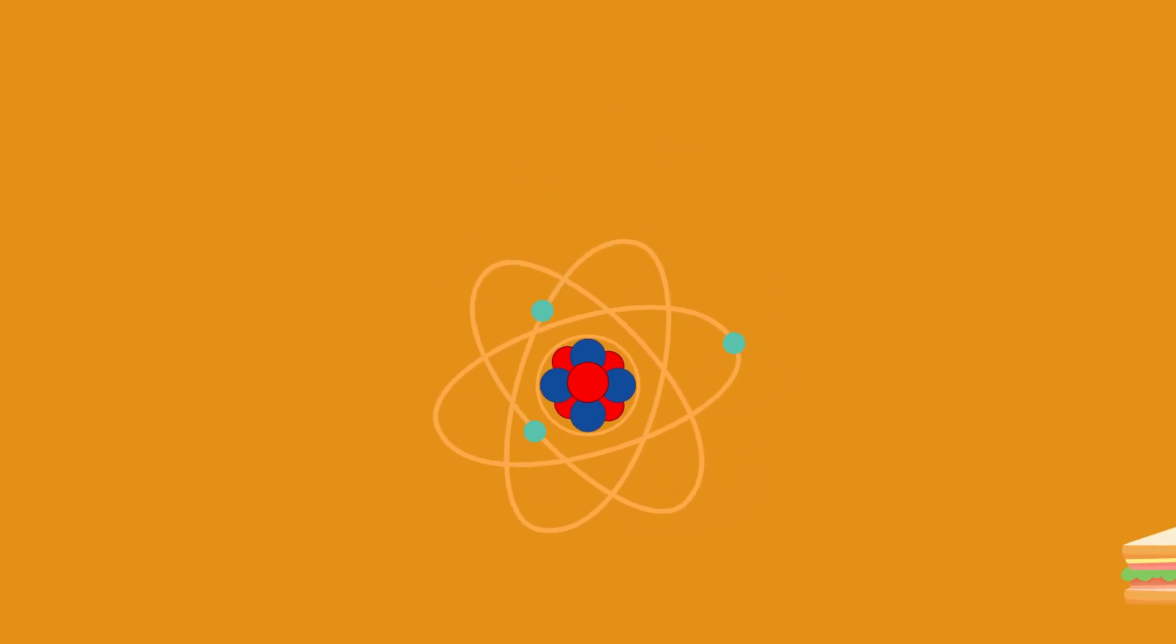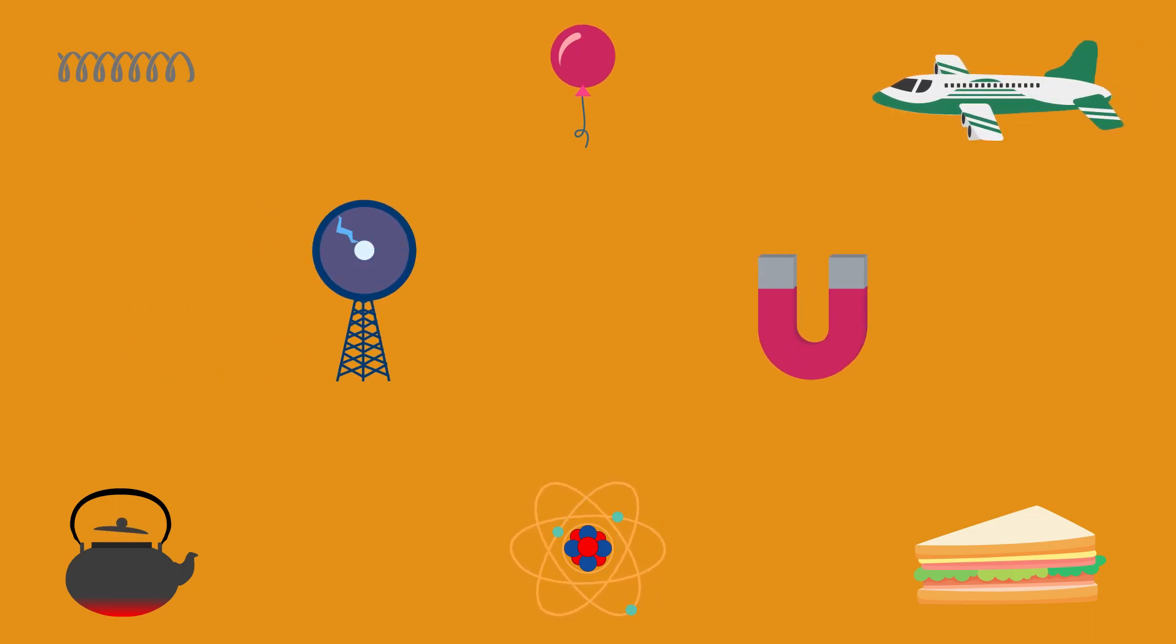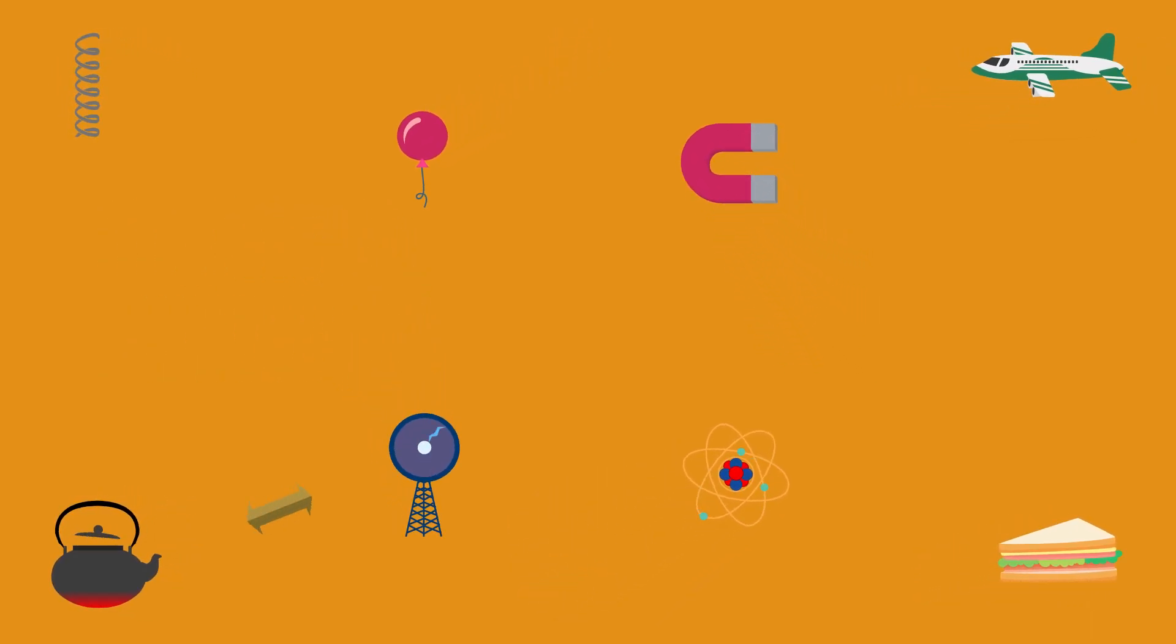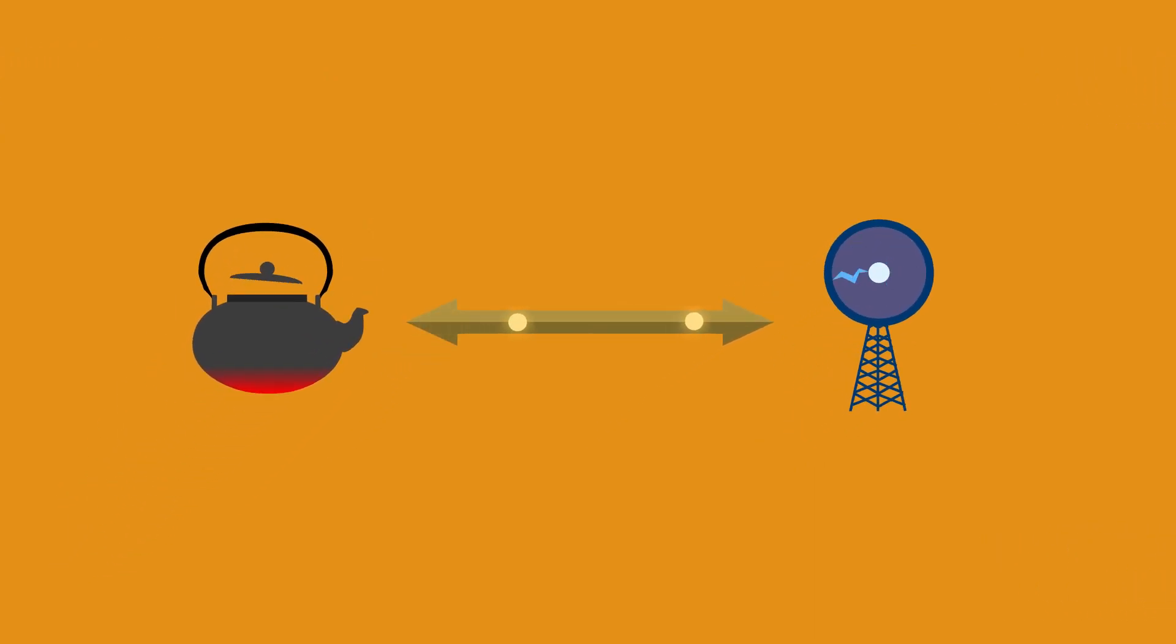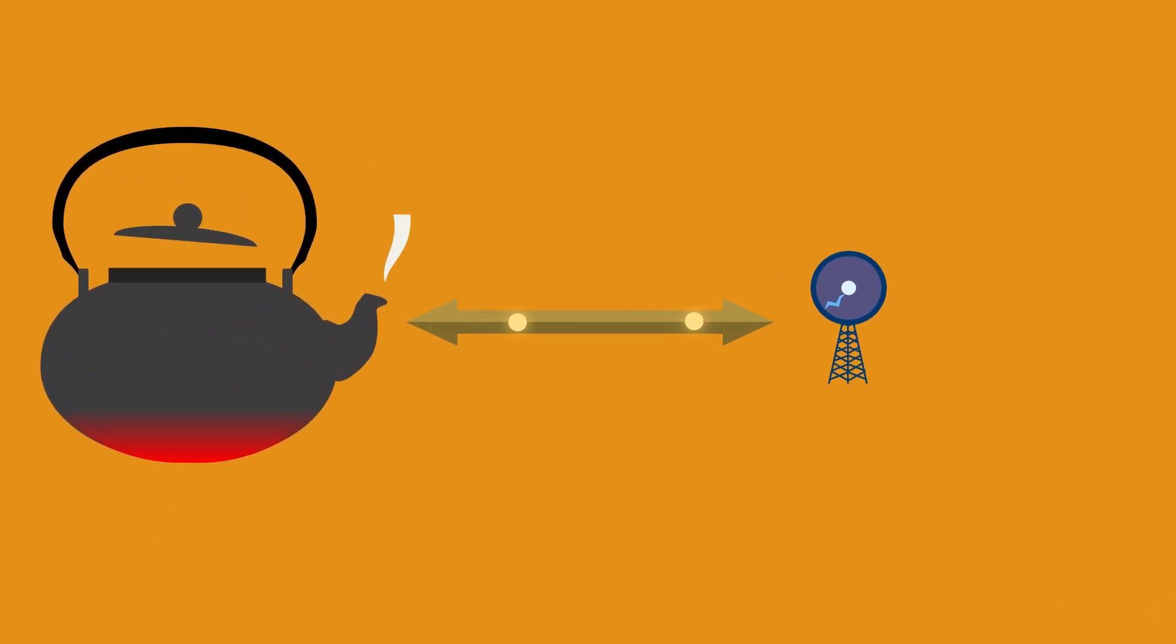So now we know where energy can be stored. We also need to know how it can move from one store to another, because as we saw earlier, energy cannot be created or destroyed. So if one store increases, another store must have decreased.